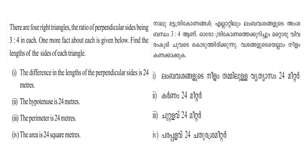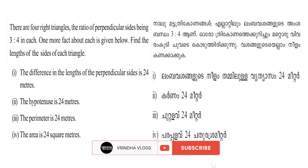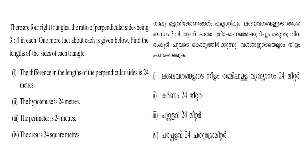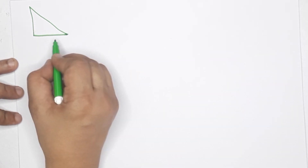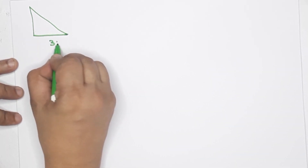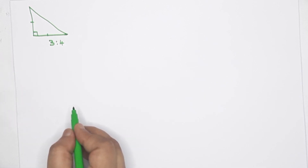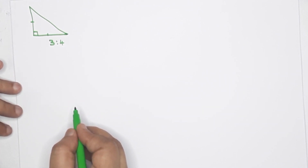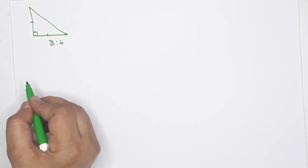Next question. There are 4 right triangles, the ratio of perpendicular sides being 3 is to 4 in each. One more fact about each is given — find the length of the sides of each triangle. First question: the difference in the length of the perpendicular sides is 24 meters.